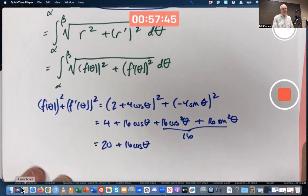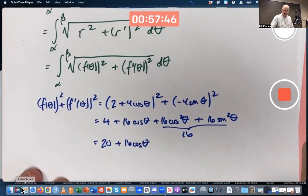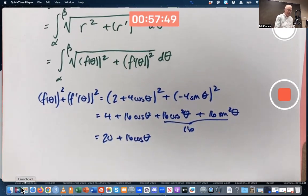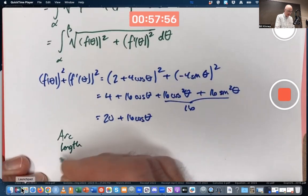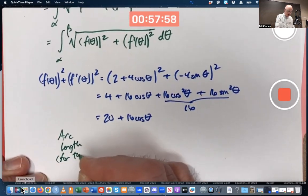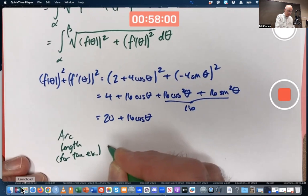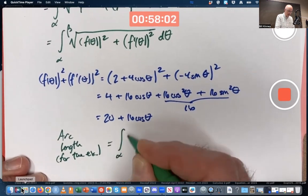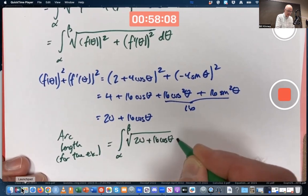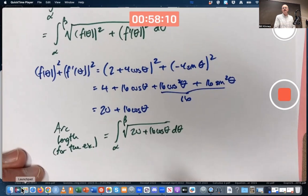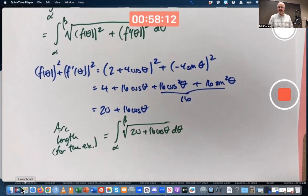which is easy to integrate, but I'm taking a square root of it. So it's not so easy to integrate. The arc length that we're after, the arc length for the example, for an arbitrary alpha and beta would be integrate alpha to beta square root of 20 plus 16 cos θ, which is not an easy integral to do.